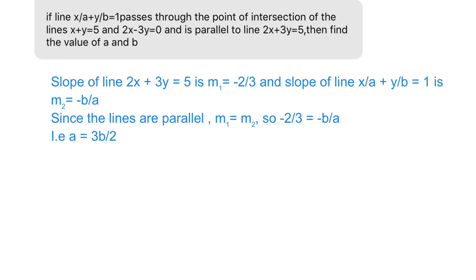The slope of any straight line is always negative of x coefficient divided by y coefficient. So here, the slope of 2x + 3y = 5 is -2/3. And for the line x/a + y/b = 1, the slope will be -b/a. Since the lines are parallel, the slopes are equal.